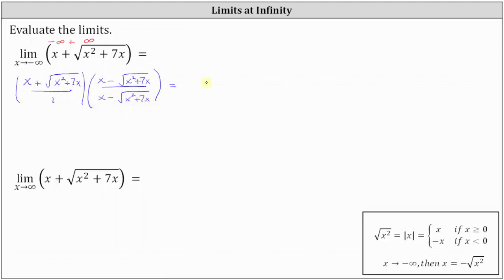Now we multiply. Multiplying the conjugates, we have x times x, which is x squared. The sum of the next two products will be zero because we have conjugates. The last product is the square root of the quantity x squared plus 7x times negative square root of the quantity x squared plus 7x, which gives us minus the quantity x squared plus 7x. The denominator is just x minus the square root of the quantity x squared plus 7x.